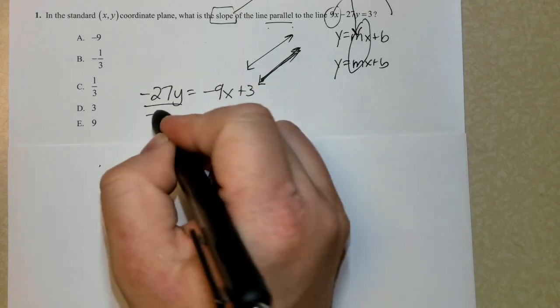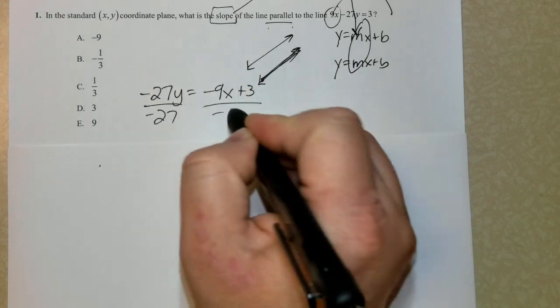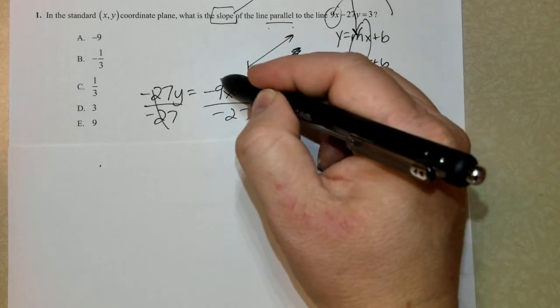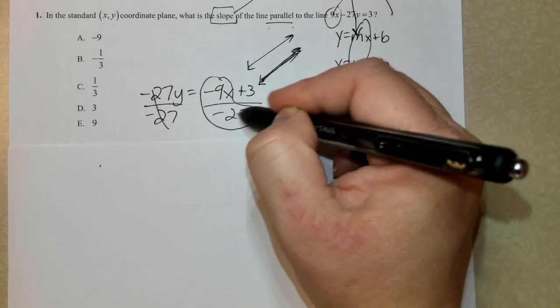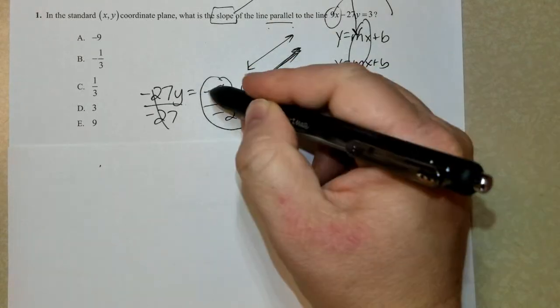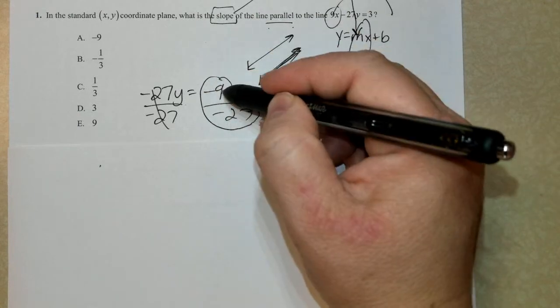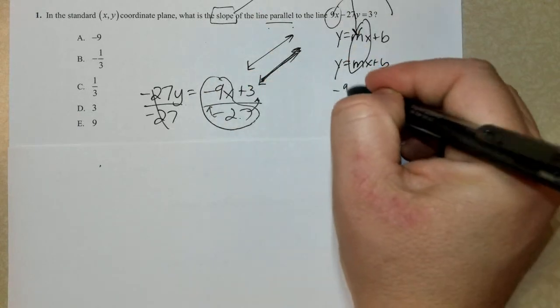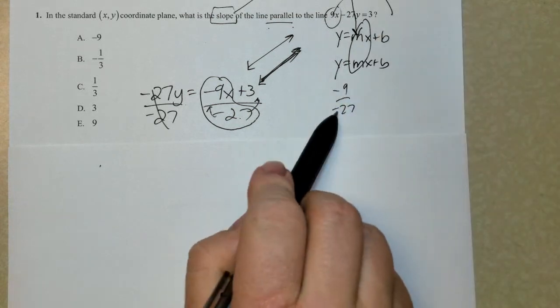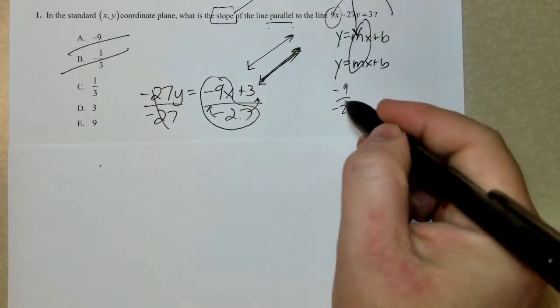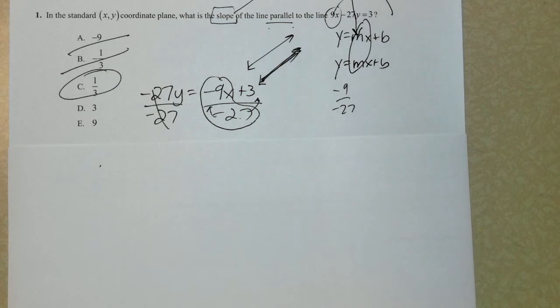I'm doing the least amount of work to get the answer. Now to isolate the y, I divide by negative 27. I'm only caring about this portion - 27 has to be shared with 3, but I want to do the least amount of work. So I have negative 9 over negative 27. Two negatives make a positive. This reduces to 1 third.